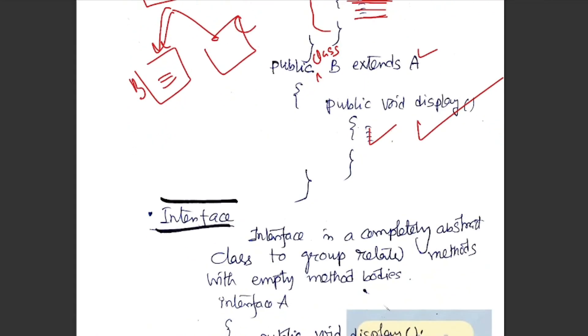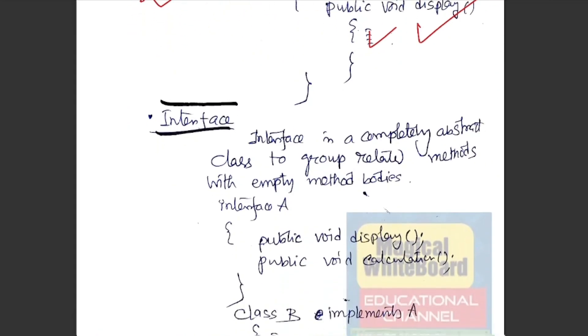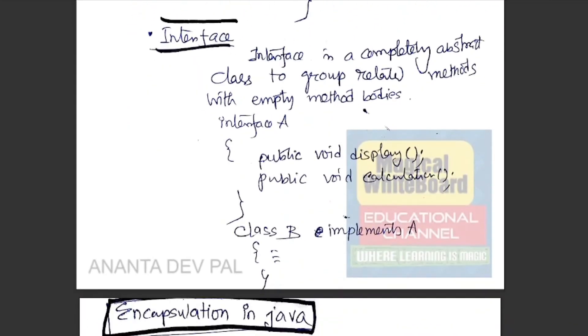This method is called the interface. In Java, we have an abstract idea for three different abstract strategies and abstract keywords.